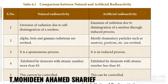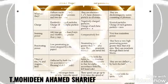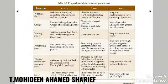In artificial radioactivity, the emission of radiation is due to disintegration of the nucleus through an induced process. Mostly elementary particles such as neutrons, positrons, etc. are emitted. It is an induced process, exhibited by elements with atomic number less than 83, and artificial radioactivity can be controlled.